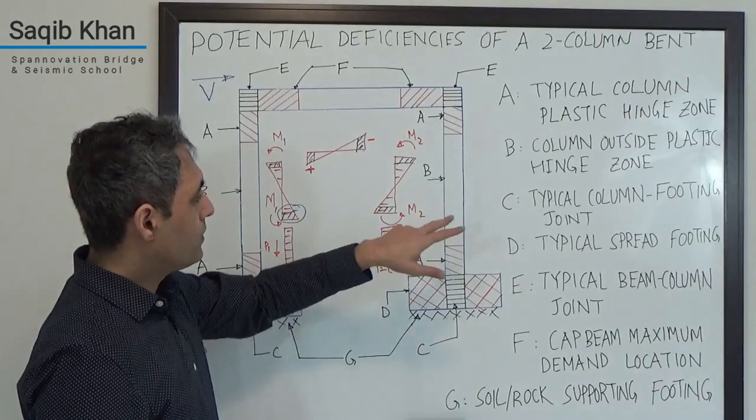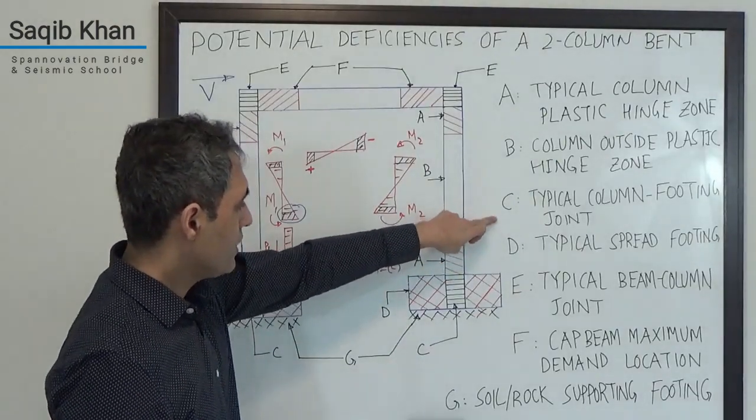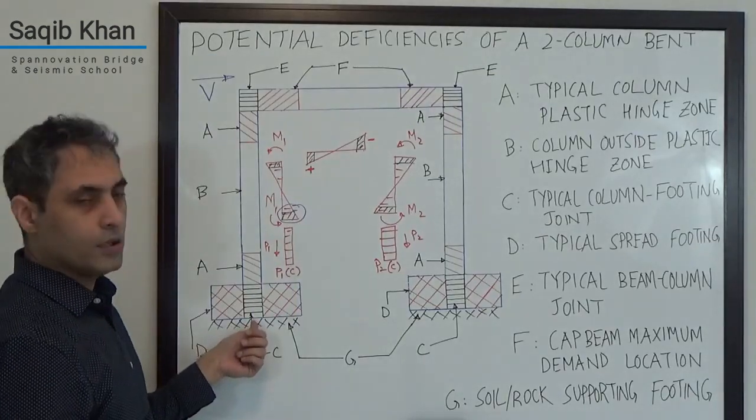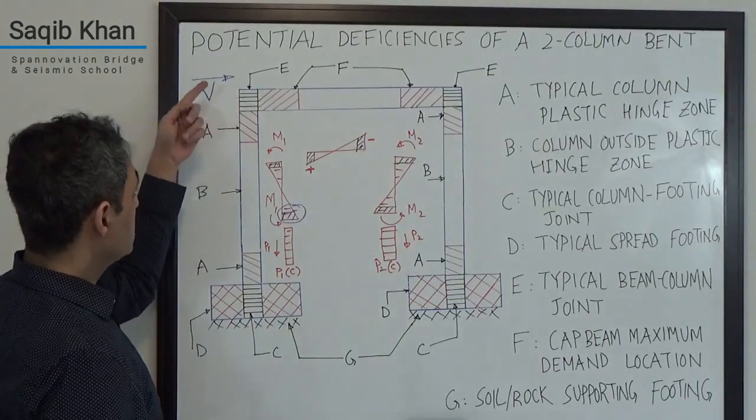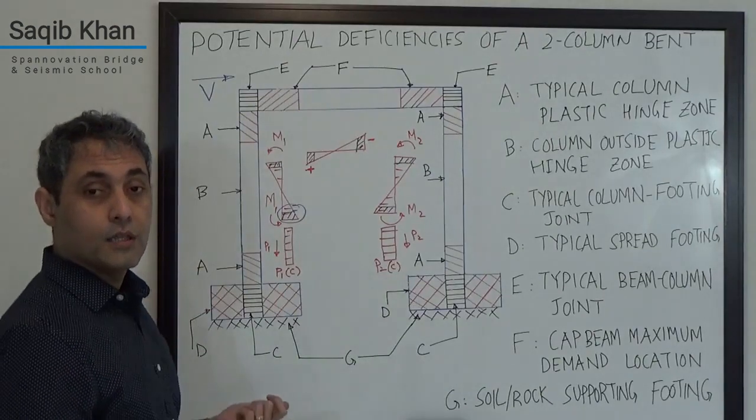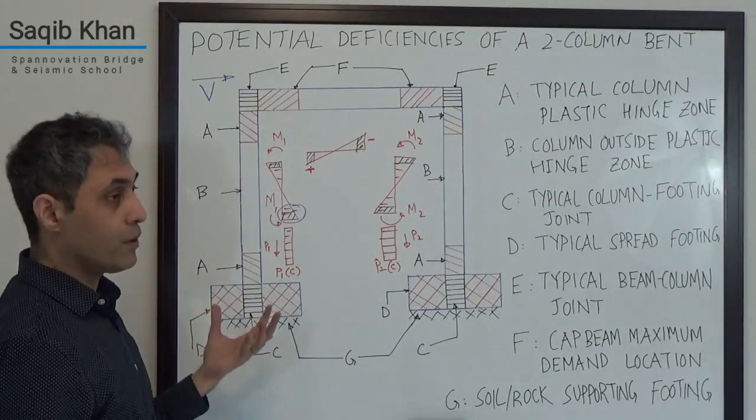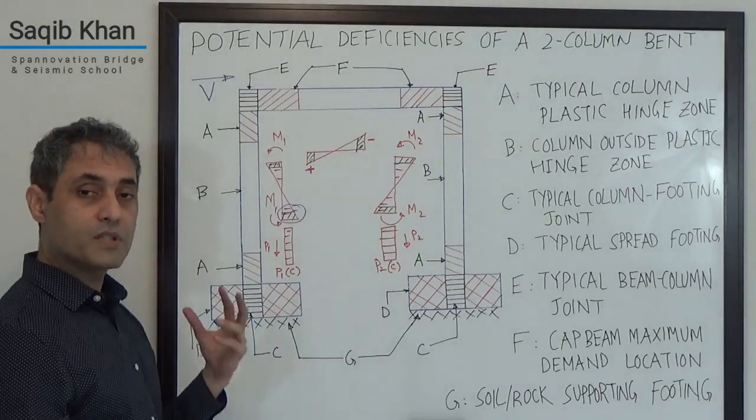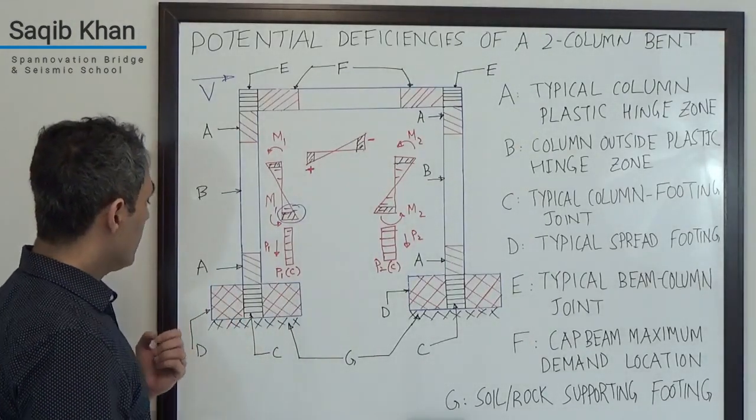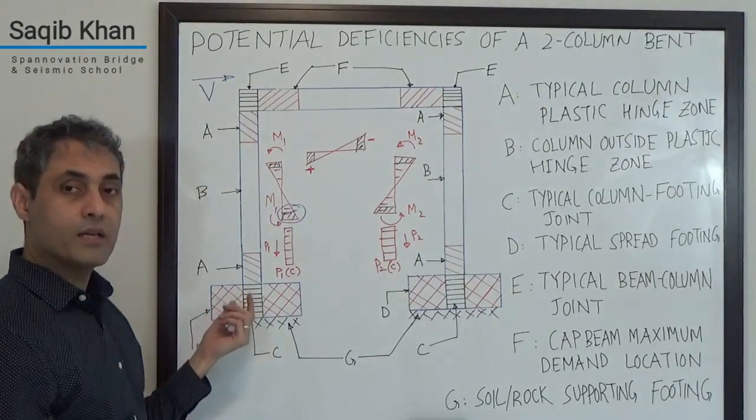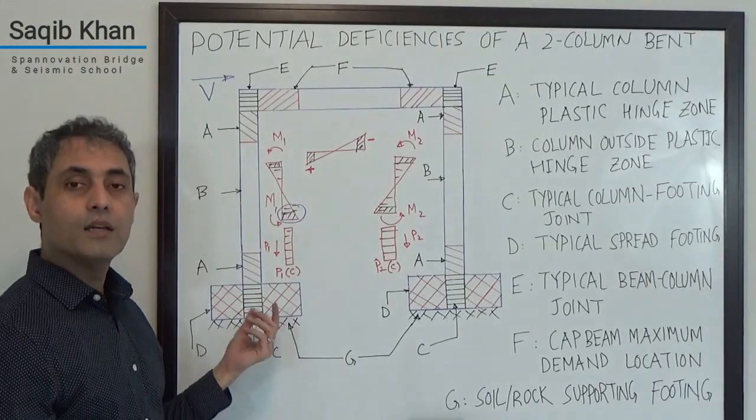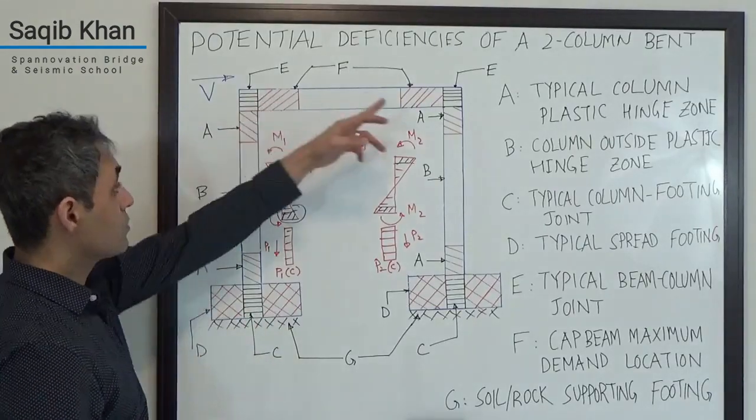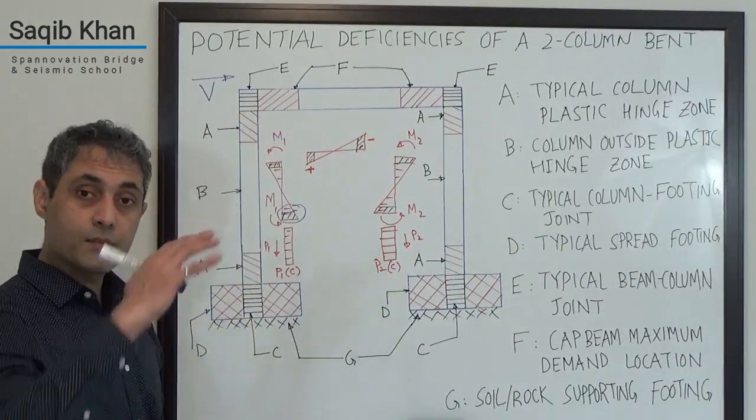I want to then talk about Zones C and E. So C is the typical column footing joint and E is the typical column cap beam joint. The joints are very, very important when it comes to transferring loads between beams and columns. They're critical. What we do not want to have happen is extensive cracking as a result of high principal stresses within these zones.